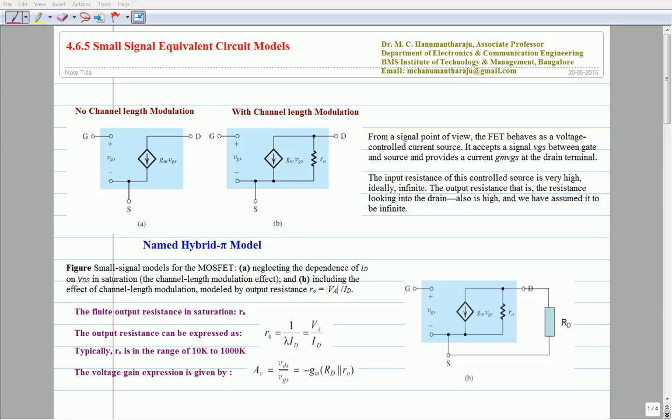It follows that the analysis and design can be greatly simplified by separating DC or bias calculations from the small signal calculations.